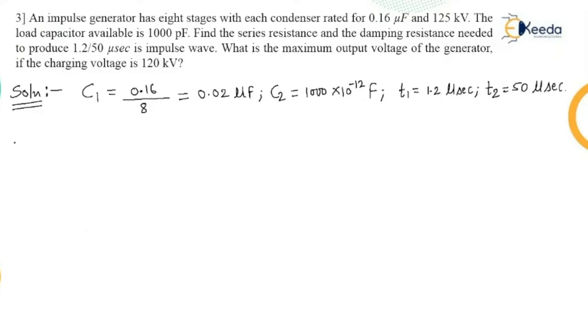Then here we have to find out the values of two resistances, series and damping resistance. Damping means connected in parallel. So R1 question mark, R2 question mark.